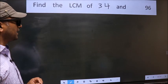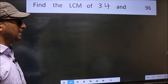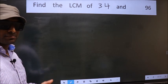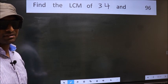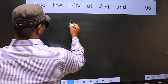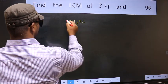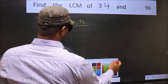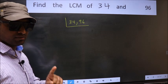Find the LCM of 34 and 96. To find the LCM, first we should frame it in this way: 34 and 96. This is step 1.